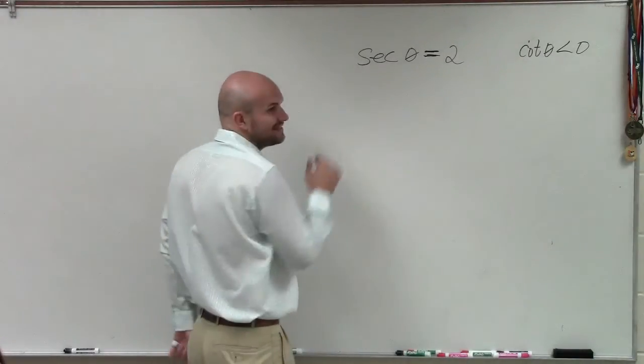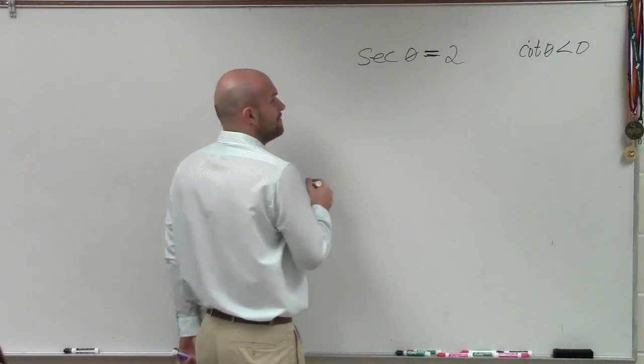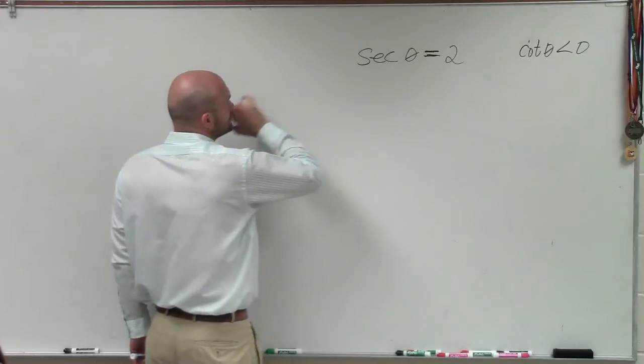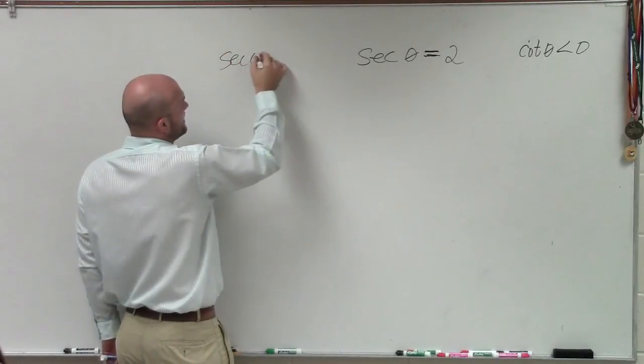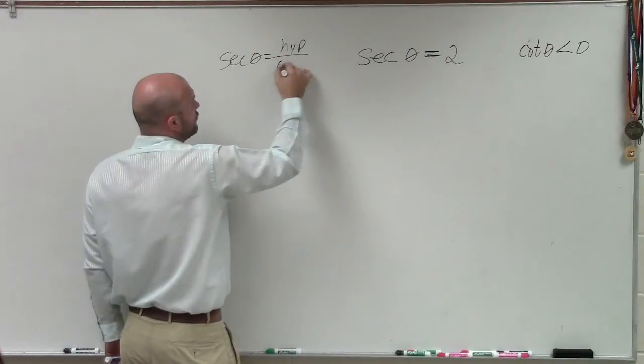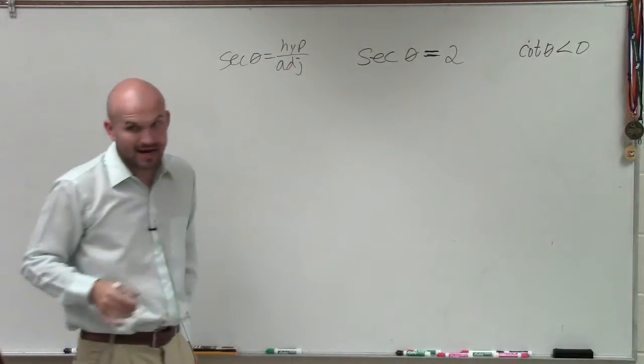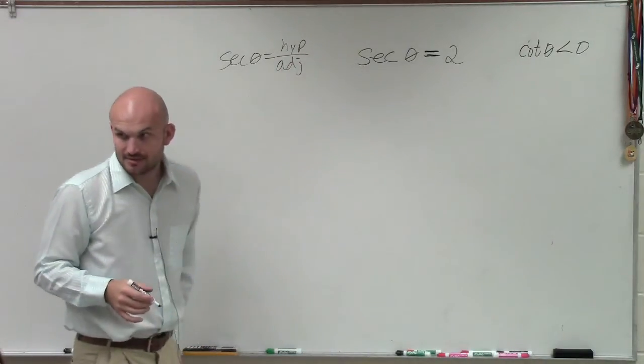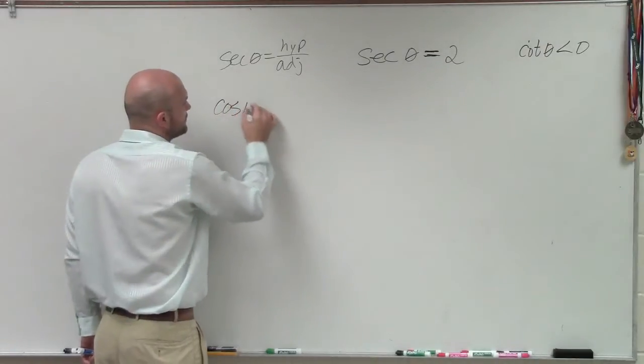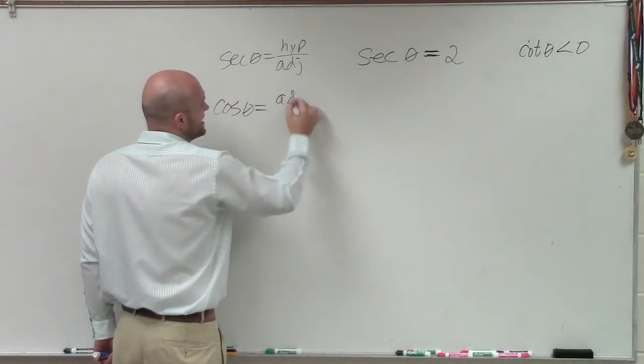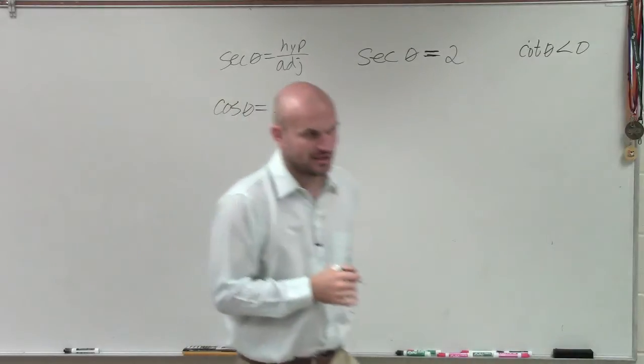So if secant of theta equals 2, remember, secant of theta represents the hypotenuse over the adjacent. Right? Because cosine of theta represents the adjacent over the hypotenuse. They're reciprocals of each other.